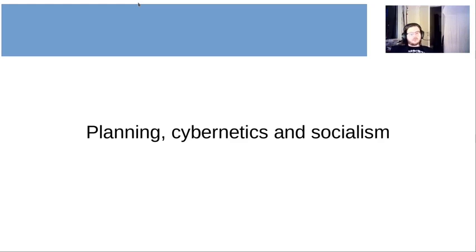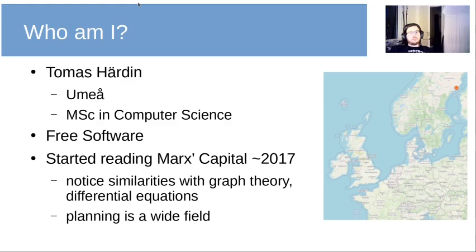So, as I said, this talk is about planning, cybernetics and socialism. But first, who am I? My name is Tomas Herlin. I live in Umeå in northern Sweden. I have a master's degree in computer science. I'm involved in the free software world. I started reading Capital around 2017, and while reading it, I started to notice similarities with stuff I know, like graph theory and differential equations. I also realized that planning is quite a wide field — it's more than just Gosplan, basically.